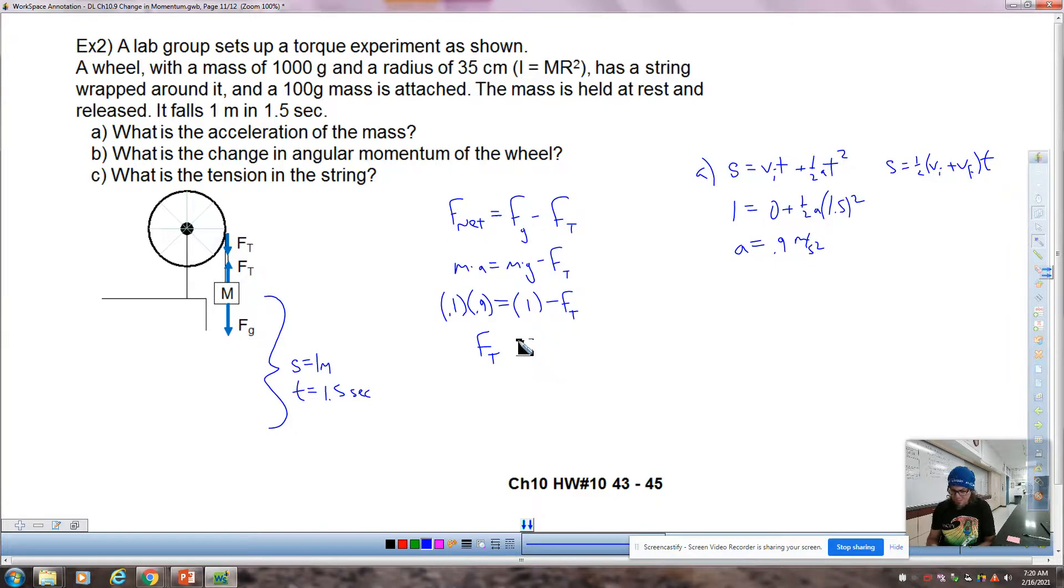and then FT equals. So, 0.9 times 0.1, and then minus 1, how about 0.91? So, instead of being 0.888 repeating, it's 0.911 repeating. So, recognize that when the answer looks the same because of rounding, it's just purely coincidental based on the numbers that I made up for this problem. So, there's the tension for part C, there's the acceleration for part A,